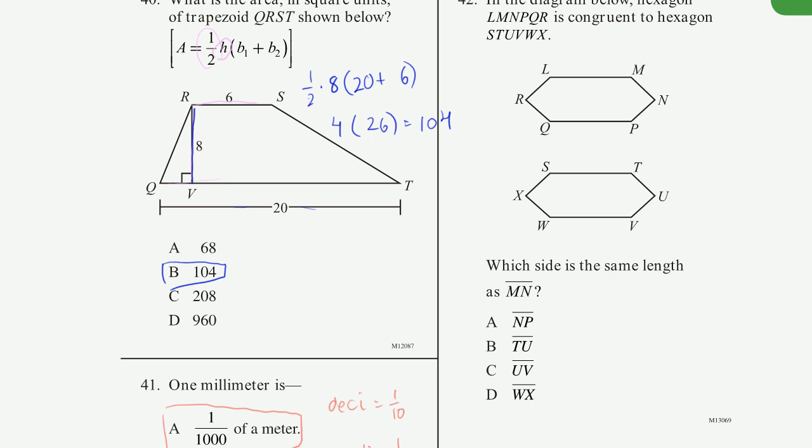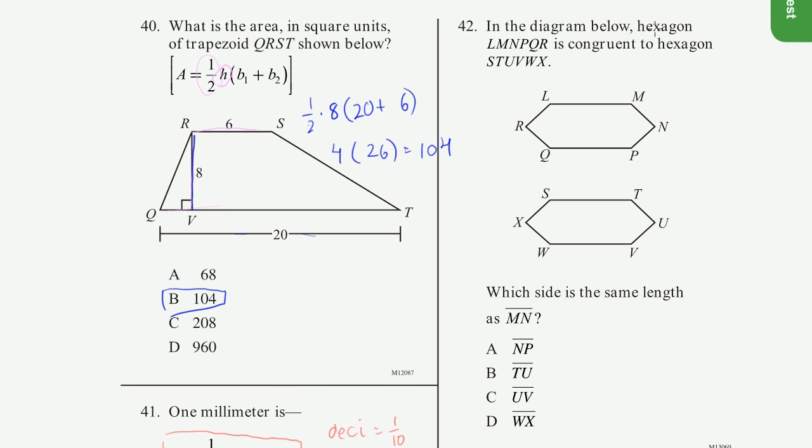Problem 42. And the diagram below, hexagon LMNPQR is congruent to hexagon S, T, U, V, W, X. So congruent just means all the sides are equal and all the measures of their angles are also equal. So they say, which side is the same length as MN? So which side is the same length as MN? So this is MN right there. We want to know what side is the same length as that. So let me make sure that they're not trying to confuse us. So they start here, they say LMN. So they start here, L, M, N, P, Q, R.